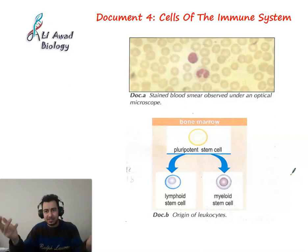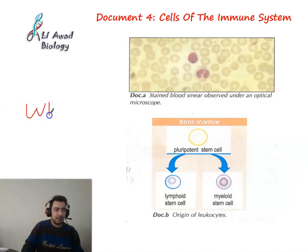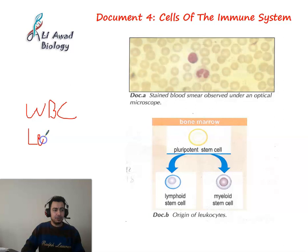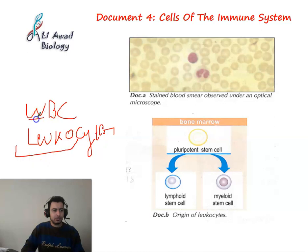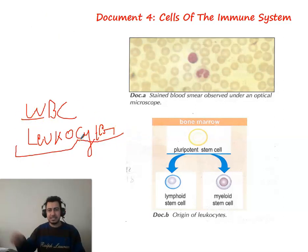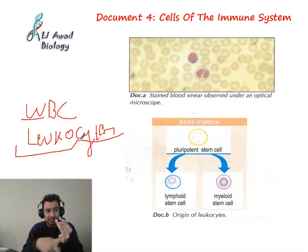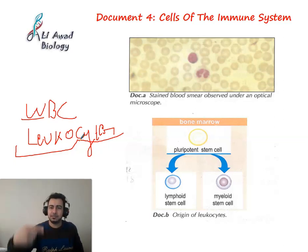The cells of the immune system are the white blood cells. White blood cells are called leukocytes. We find them in the blood but not only in the blood - we find them in all body fluids, and they circulate inside our bodies from head to legs.